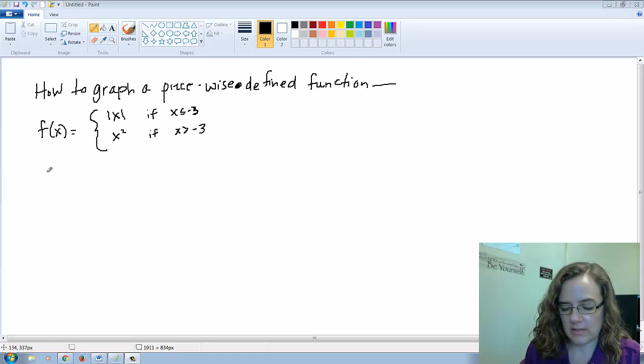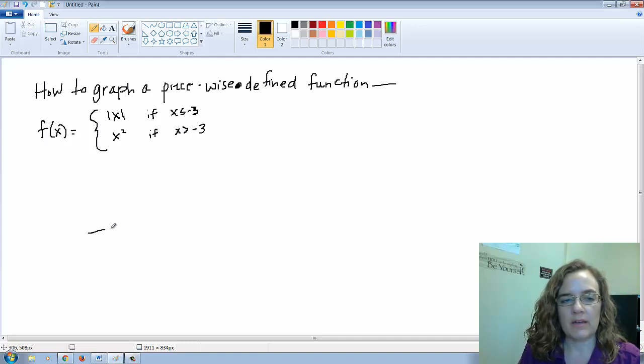The thing to pay attention to: since we have this absolute value of x on the portion where x is less than or equal to negative 3, you may want to go ahead and just graph out your x and y plane where you're starting here at negative 3. So at negative 3, if we're going anything less than negative 3, we're using y equals absolute value of x.